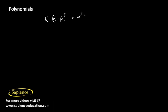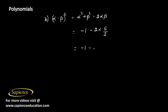Now we find (α - β)². Expanding: (α - β)² = α² + β² - 2αβ. We found α² + β² = -1, so this becomes -1 - 2 × (5/2) = -1 - 5 = -6. So (α - β)² = -6.